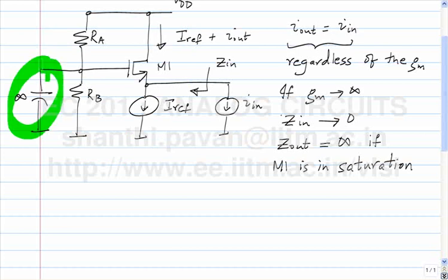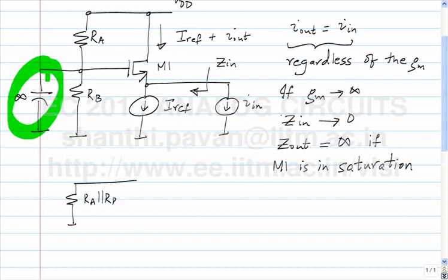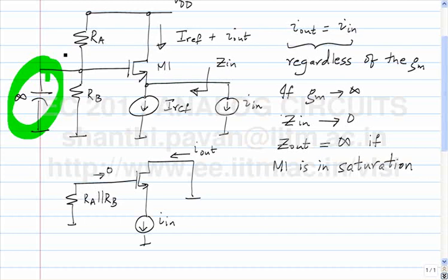Can somebody tell me if this capacitor here is strictly necessary? No — why? Because the absolute current flowing through the gate is 0. Since no current flows through the gate, if you draw the incremental circuit, you have R_A parallel R_B going to the gate. Since no current flows through the gate, the voltage drop across R_A parallel R_B is 0, which means that whether you have the capacitor or not, the potential at the gate is incrementally ground.